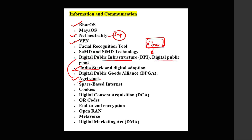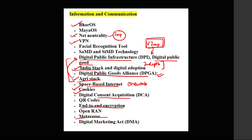Related to digital public infrastructure are the concepts of India Stack and Agri Stack. Please prepare these topics in depth — I have covered them in my Optima notes. Also related is the digital public good alliance; there are a few alliances on digital good you should prepare. Related to internet, there are topics like space-based internet, OneWeb, cookies, what are cookies, digital consent acquisition, and end-to-end encryption.